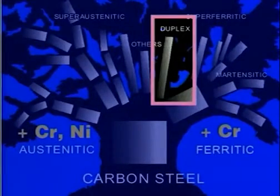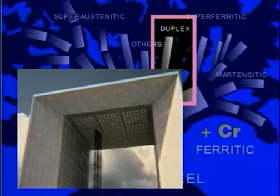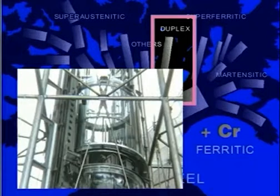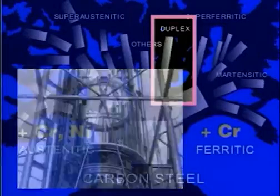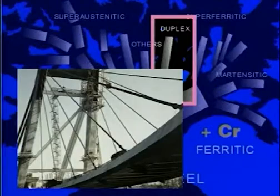The good corrosion resistance of duplex steel has already been mentioned, but the high mechanical properties of modern duplex steels makes them ideal for high integrity structural applications such as this exterior structure. It's also been chosen to reinforce the concrete in this bridge. And cast duplex stainless steel was specified for these turbine wheels, which will spend all their working life surrounded by water.